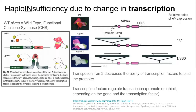So, generally, mutations in the exons are the ones that will impact the phenotype the most. You will see some mutations that are silent and that they don't. But in general, mutations in the exons impact phenotype.